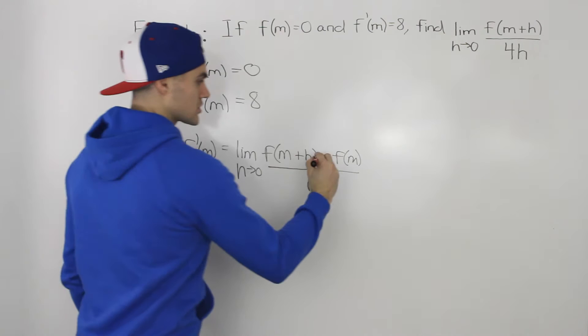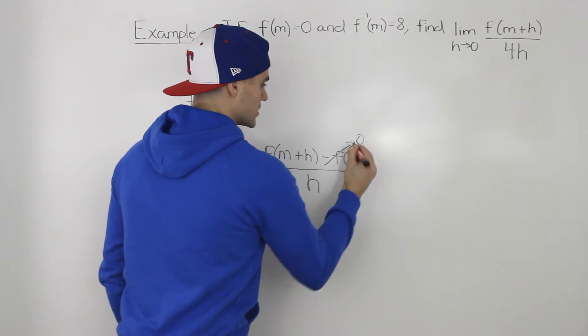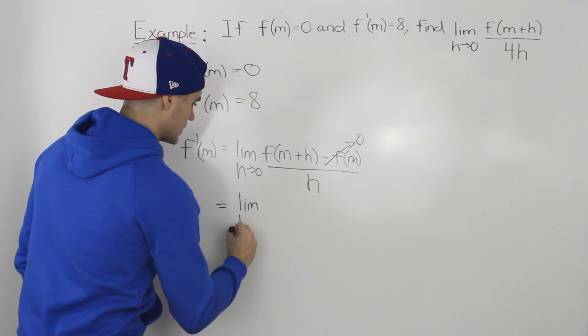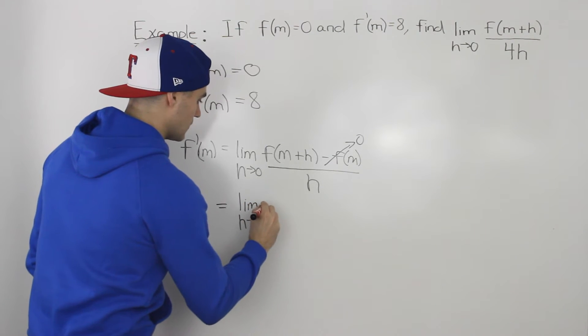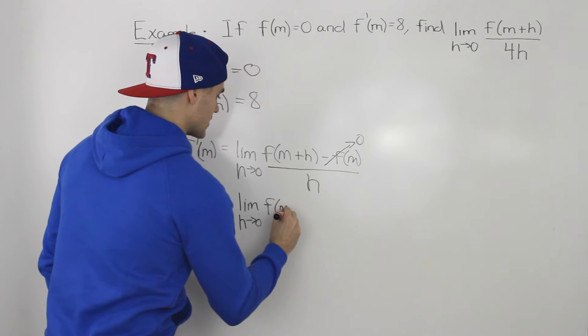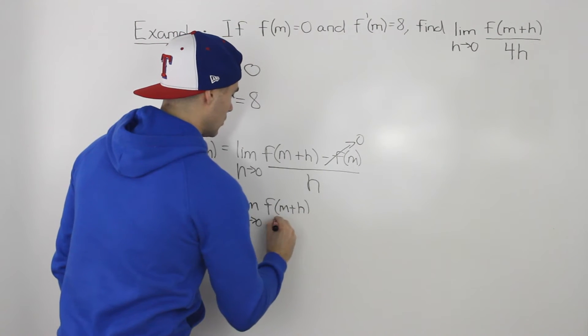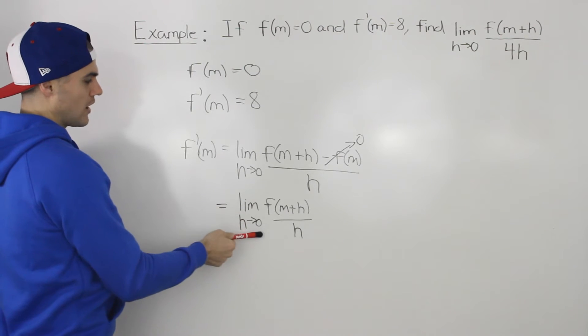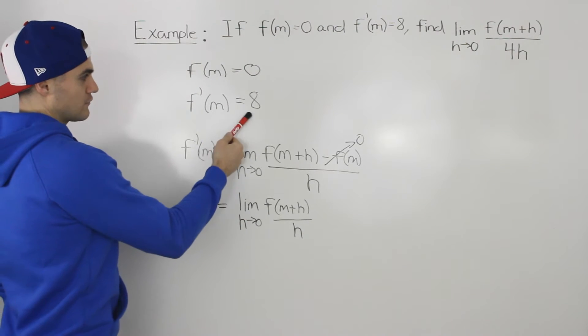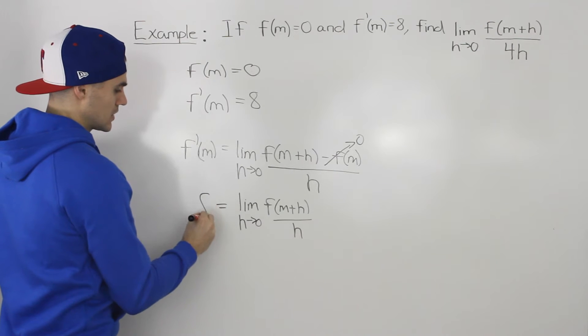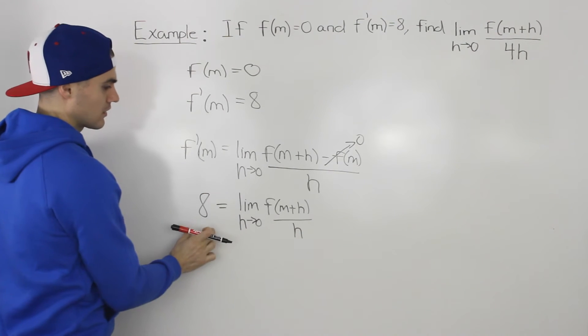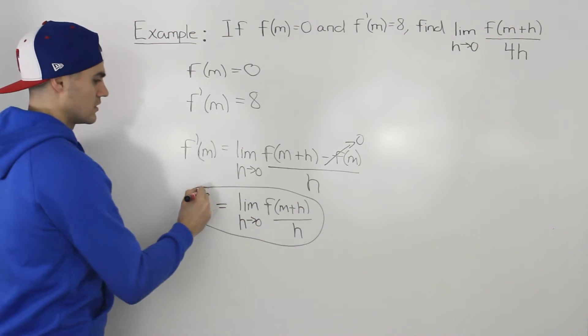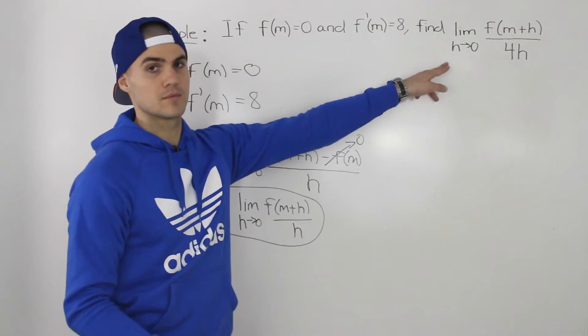That's given in the question. So we know that this portion is equal to 0. So we can rewrite this as the limit as h goes to 0 of f of m plus h all over h. And because this represents the derivative f prime m, we know that f prime m is equal to 8. So we know that this whole expression here is equal to 8. And now we can use this expression to find this limit here.